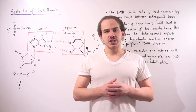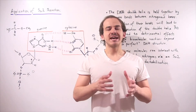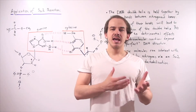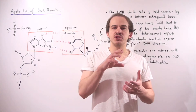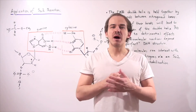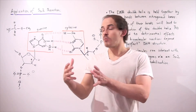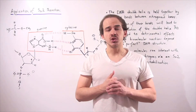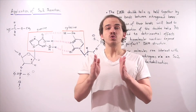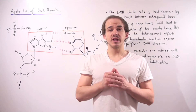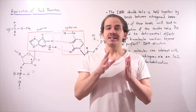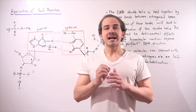Let's examine an application of an SN2 reaction that exists inside our body. If we take any cell in our body and zoom into the nucleus, we will eventually get to a DNA molecule. DNA is a double helix composed of two opposing but complementary nucleic acids running in opposite directions, held together by hydrogen bonds between the opposing nitrogenous bases.